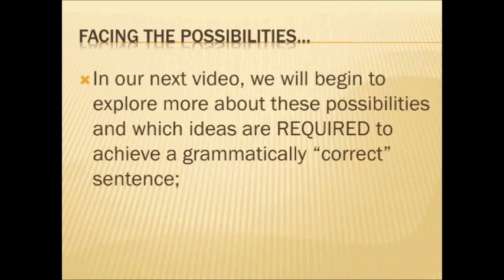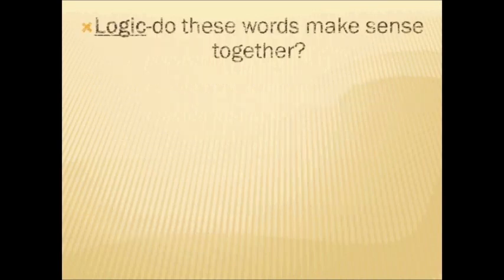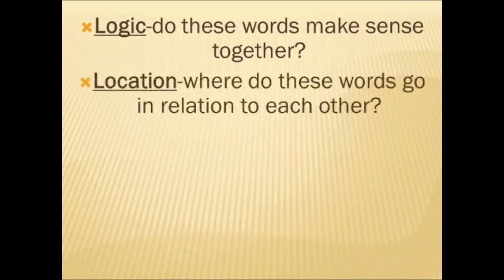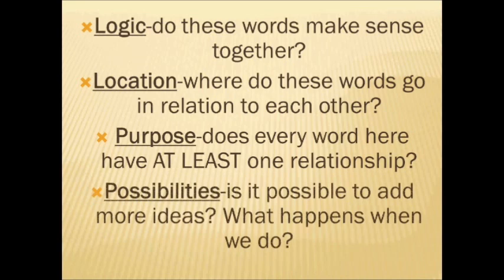In our next video, we will begin to explore more about these possibilities and which ideas are required to achieve a grammatically correct sentence. For now, the most important things to remember are: the key idea of logic — do these words make sense together? Location — where do these words go in relation to each other? A new concept to think about is purpose — does every word here have at least one relationship? And possibilities — is it possible to add more ideas, and what happens when we do?